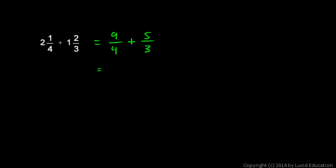We need to rewrite these with a common denominator, which is 12. Instead of 9/4, what do I put in the numerator? Well, 4 times 3 gives me 12, so 9 times 3 goes there, and that's 27. So 9/4 is the same as 27/12. For 5/3, 3 times 4 is 12, so 5 times 4 goes there—that's 20.